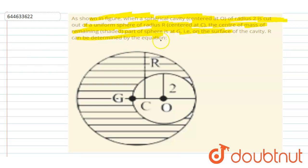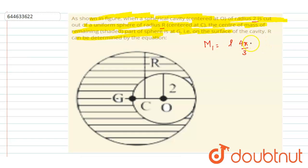This can be assumed to be made up of a bigger sphere of radius r minus a smaller sphere of radius 2. If I talk about the masses of the two: the bigger sphere will have a mass equal to density times r cubed, and the cavity will have a mass — I will consider this as a negative mass.